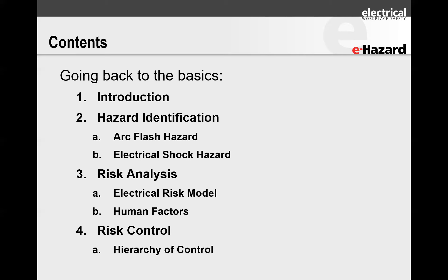I'm going to cover the introduction and then run through three different elements of the risk assessment. One is identifying what can hurt you. Then determining what actions can result in that mechanism causing harm — in that electricity shocking you or burning you. And finally, we'll hit the risk control, which means: I can get burned or shocked with this, so what can I do about it? Before I jump into this, I've got a poll question for you.